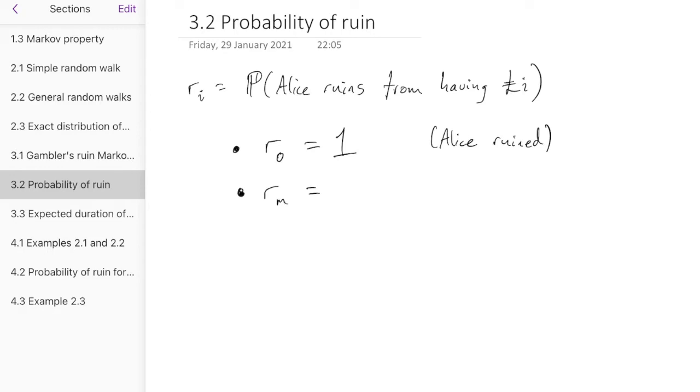You can also say something about R_m. So if Alice has m pounds, that means she's won all the money, which means Bob has no money, which means Bob has lost, so Alice has won. So the probability that Alice is ruined is 0, so Alice is certain to win, she ruins with probability 0.